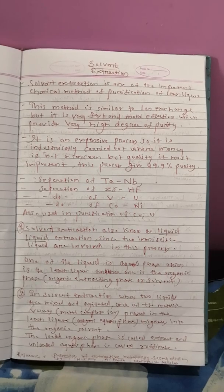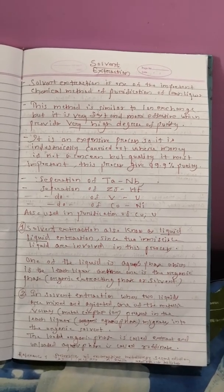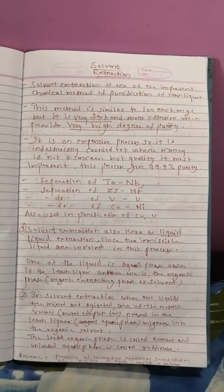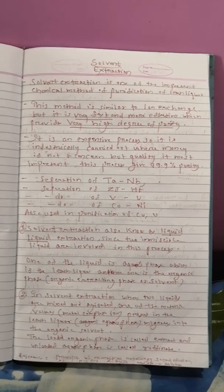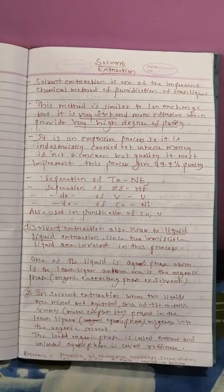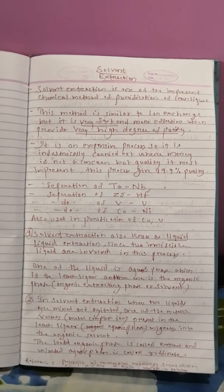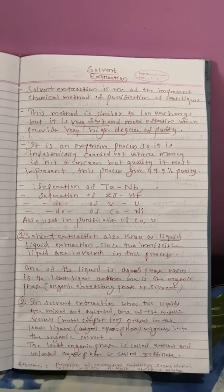So finally at end of the process we will get organic phase containing one metallic value and the aqueous phase containing the impurities part, or that is the organic phase is the loaded organic phase and the aqueous phase is the unloaded aqueous phase. Unloaded aqueous phase is called raffinate and loaded organic phase is called extract. Thank you, we'll continue in the next lecture.